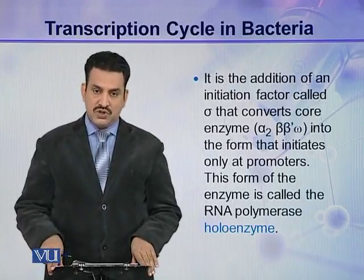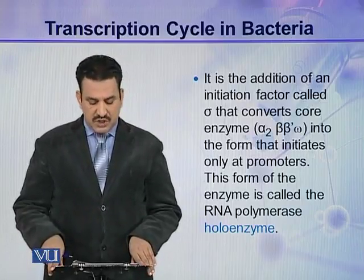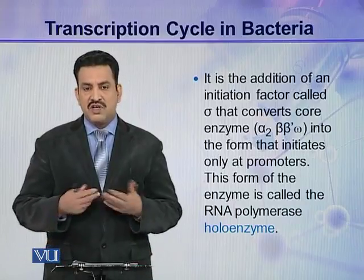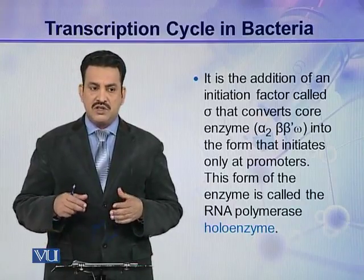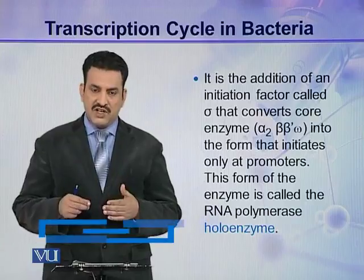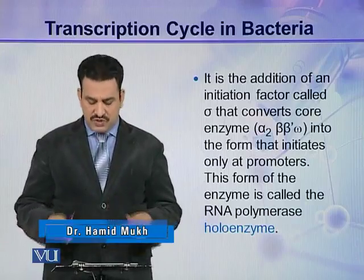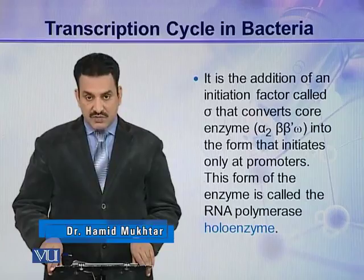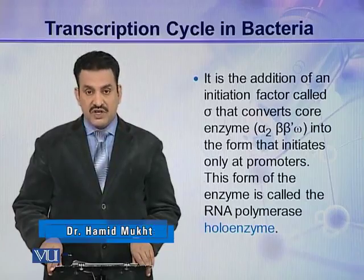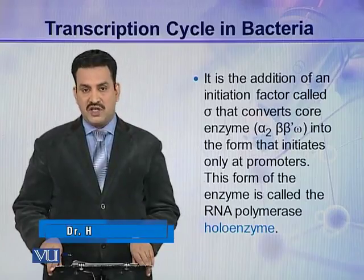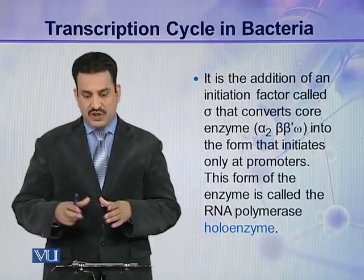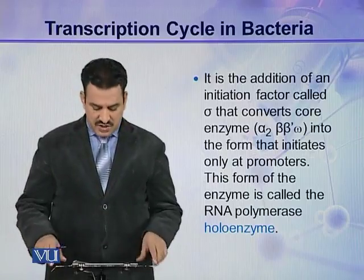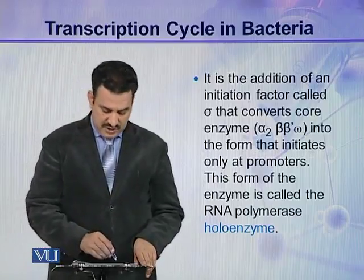If the sigma factor is not present, the core enzyme cannot recognize the site from where transcription is to be started. This complete form of the enzyme — all five subunits plus the sigma factor — is called the RNA polymerase holoenzyme.